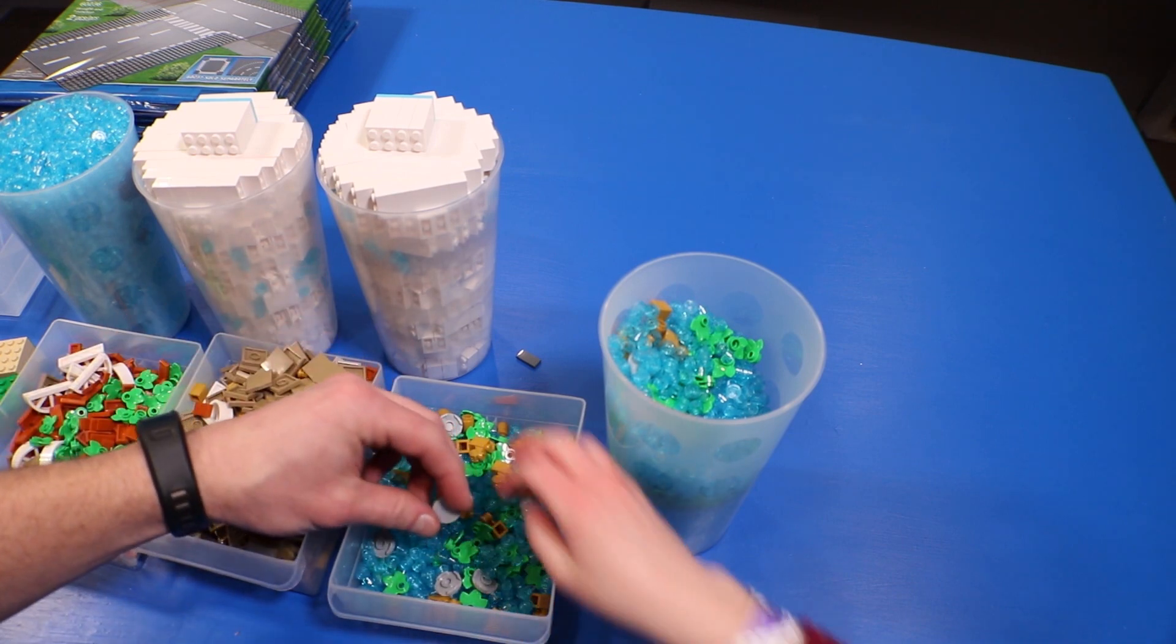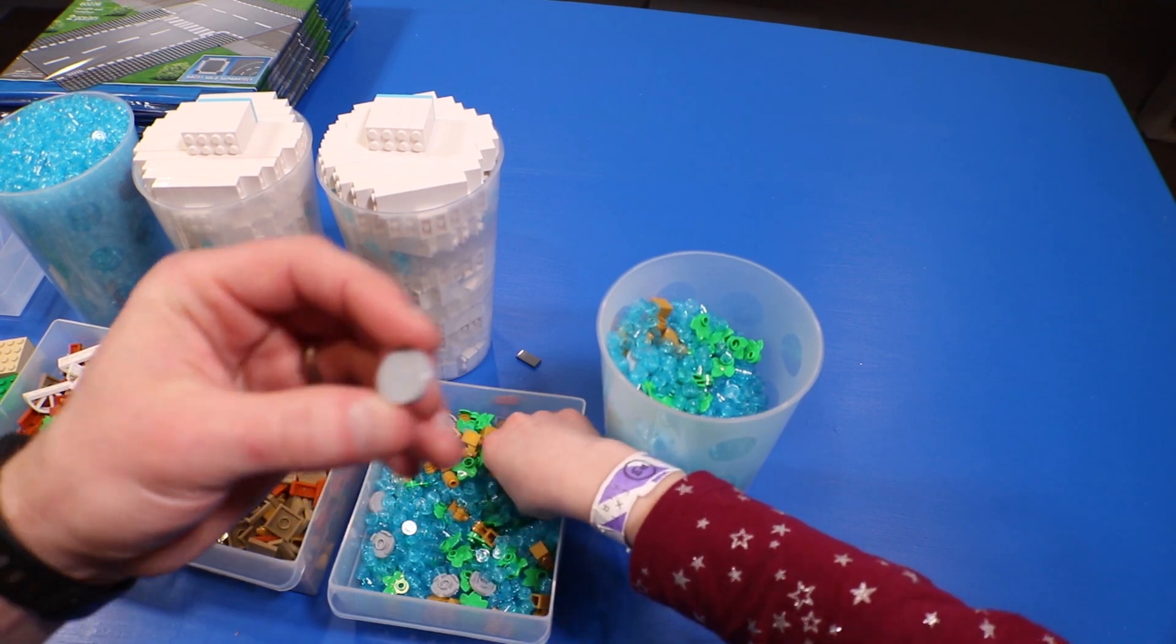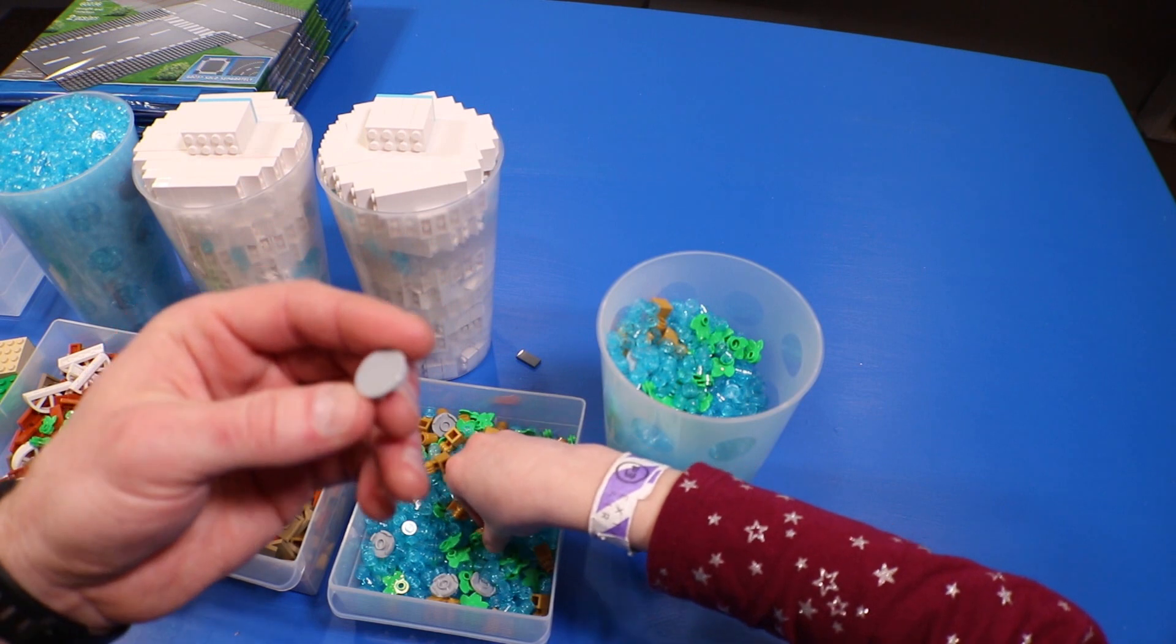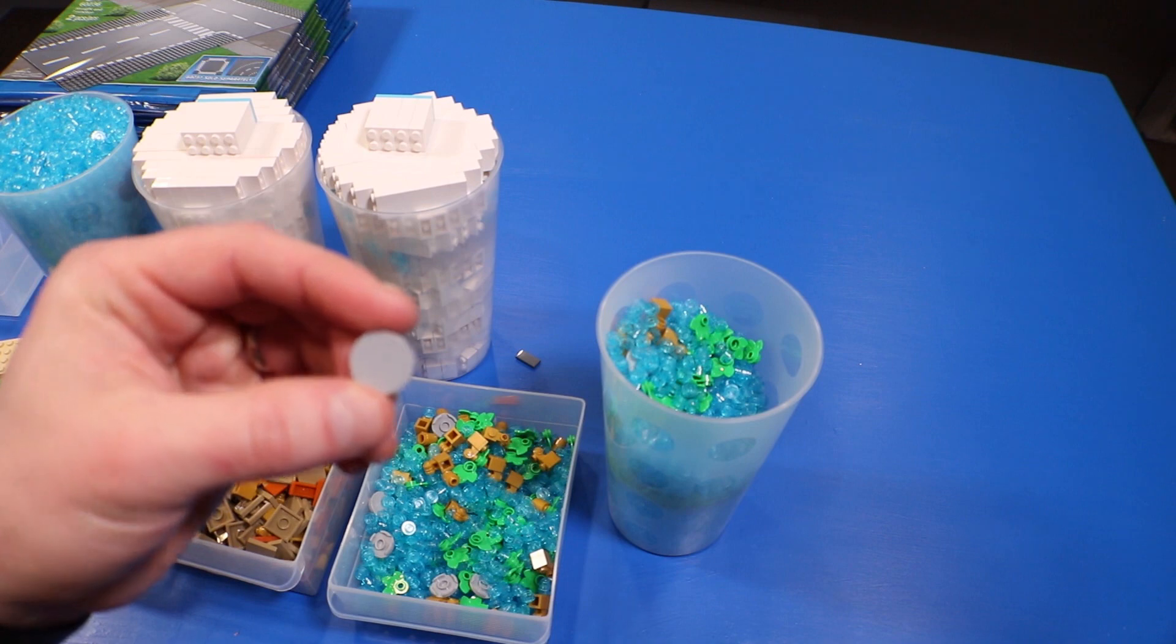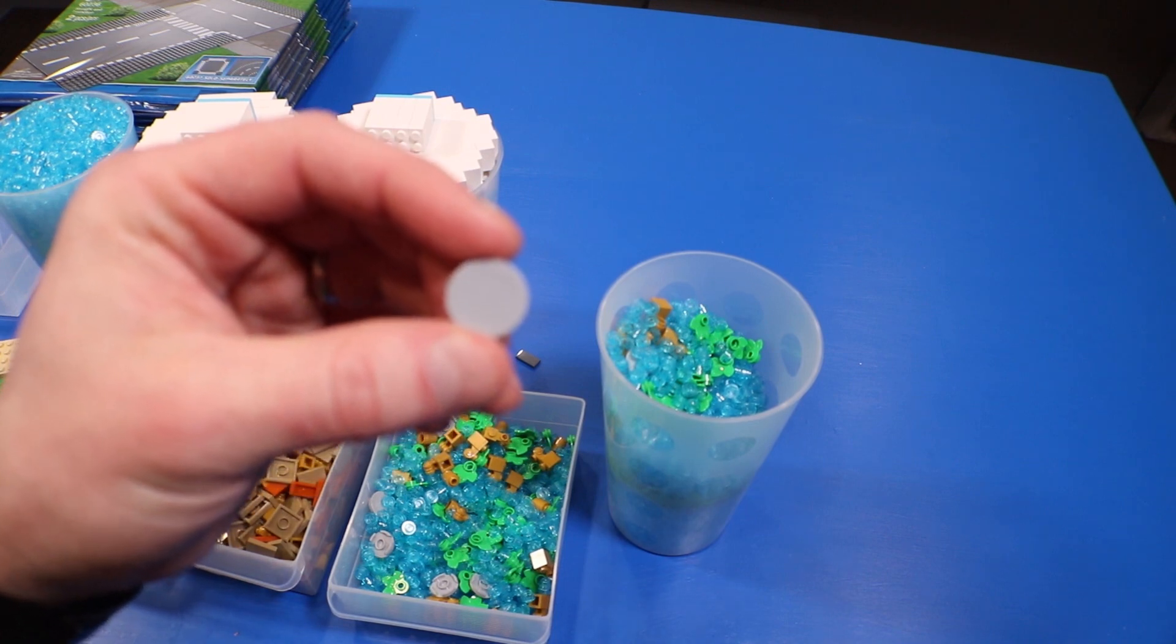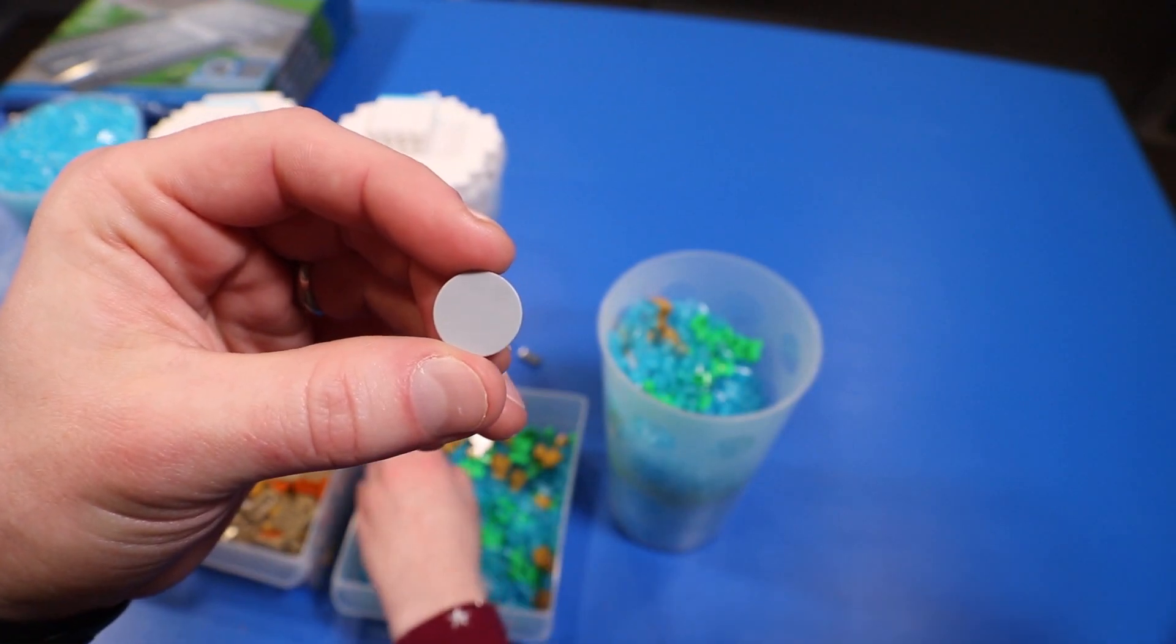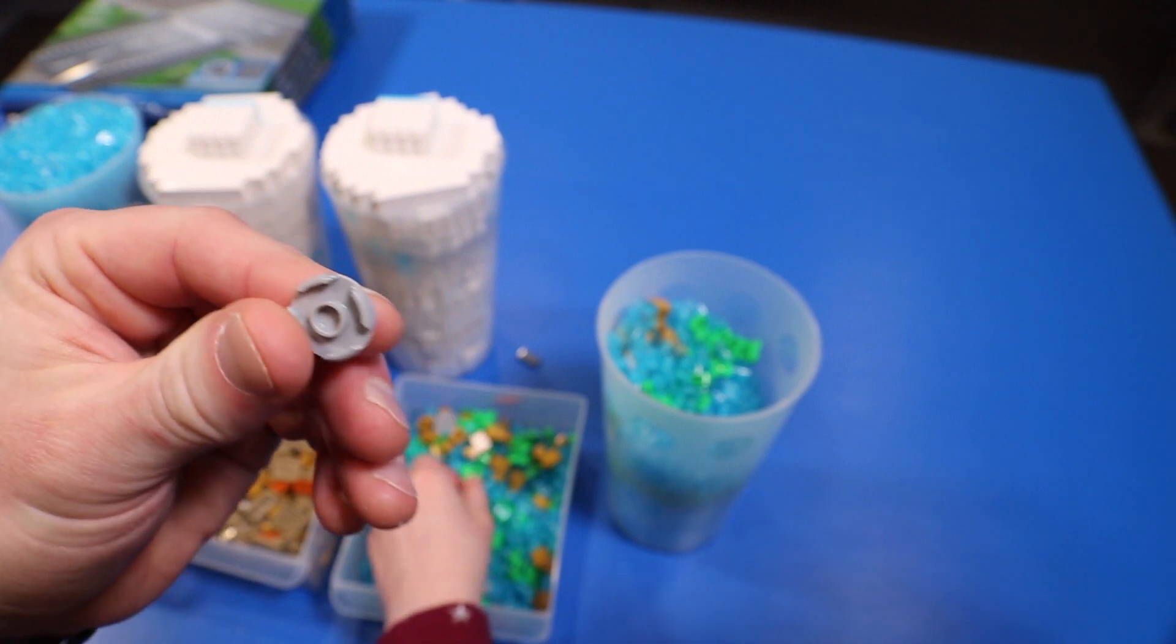I think we also had some - we found some more of the gold one by one round bricks. We also, there was a few left of these two by two round light bluish gray tiles.